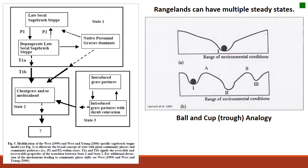Another way to think about state and transition models is the ball-and-trough analogy. The black ball in different troughs represents different community stable states. When you cross a threshold, you move the ball from one trough to another — from community one to community two, for example. You can have some fluctuation or movement of the ball within a trough, but getting from one plant community to another requires human input.